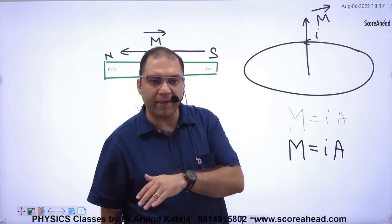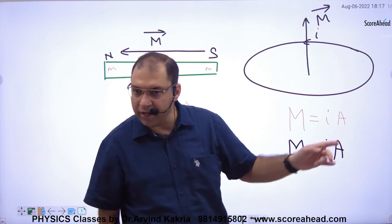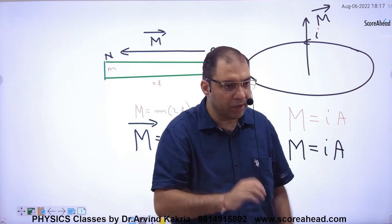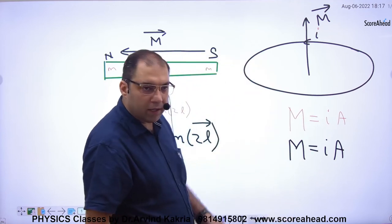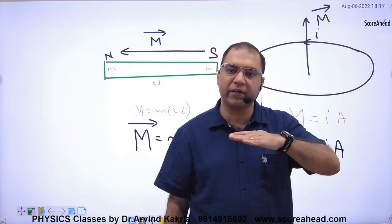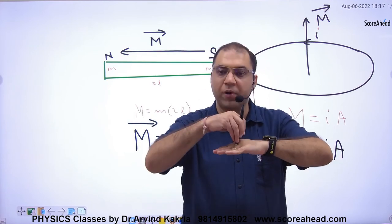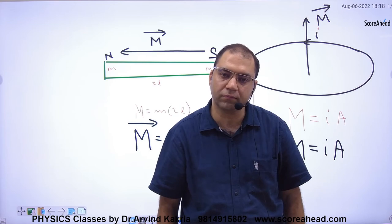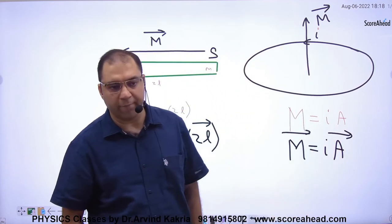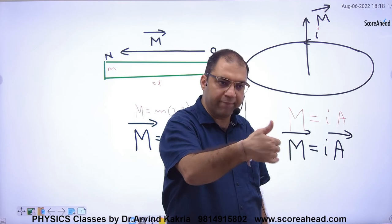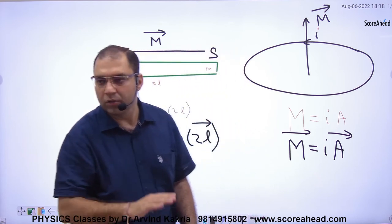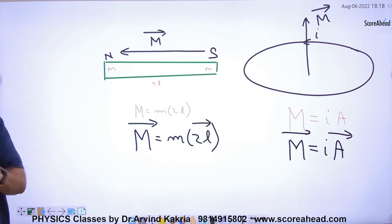So B and capital M follow the same right-hand rule. If it is a bar magnet, M points from south to north. If there is a current-carrying loop, apply the right-hand rule to get the thumb direction, which gives both B and capital M. Similarly, the area vector of the loop is perpendicular to the plane of the loop, and its direction also follows the same right-hand rule — the direction of M and the area vector A are the same.